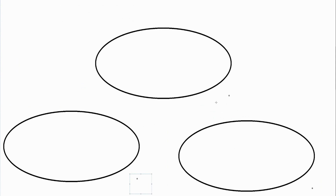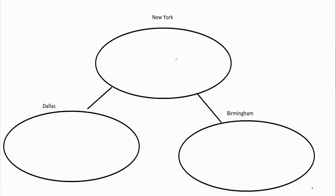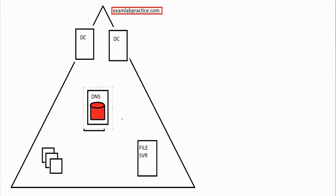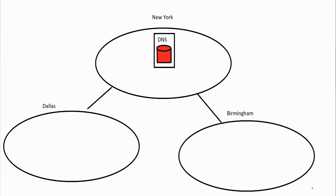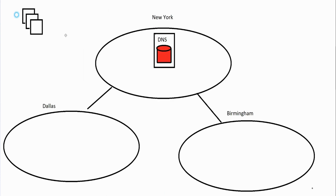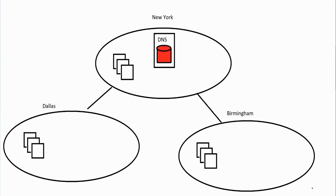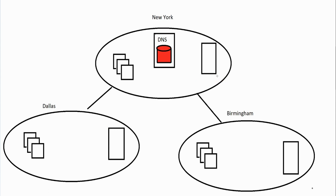These ovals represent sites — geographic locations of your company. Let's say we've got New York, Dallas Texas, and Birmingham Alabama, connected by WAN lines. Maybe New York is our corporate headquarters. We've got one DNS server in New York and computers in all of our locations — New York, Dallas, and Birmingham — possibly with servers in each location. Clients need to authenticate with Active Directory and we've also got domain controllers in each location.